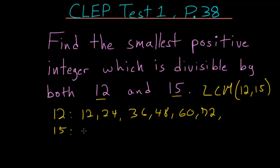But for 15 we have 15, 30, 45, 60, and notice that each of these share the number 60 and that's the smallest number that's divisible by both. So we know that 60 is the answer to our problem.